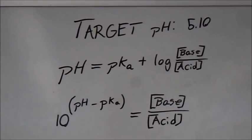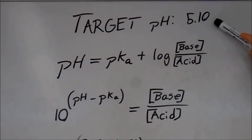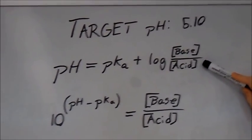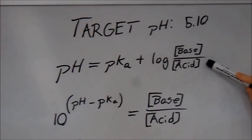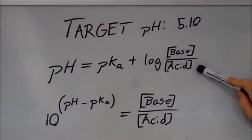The example target pH I'm using is 5.10. The Henderson-Hasselbalch equation expresses pH as pKa plus the log of a ratio of base to acid.